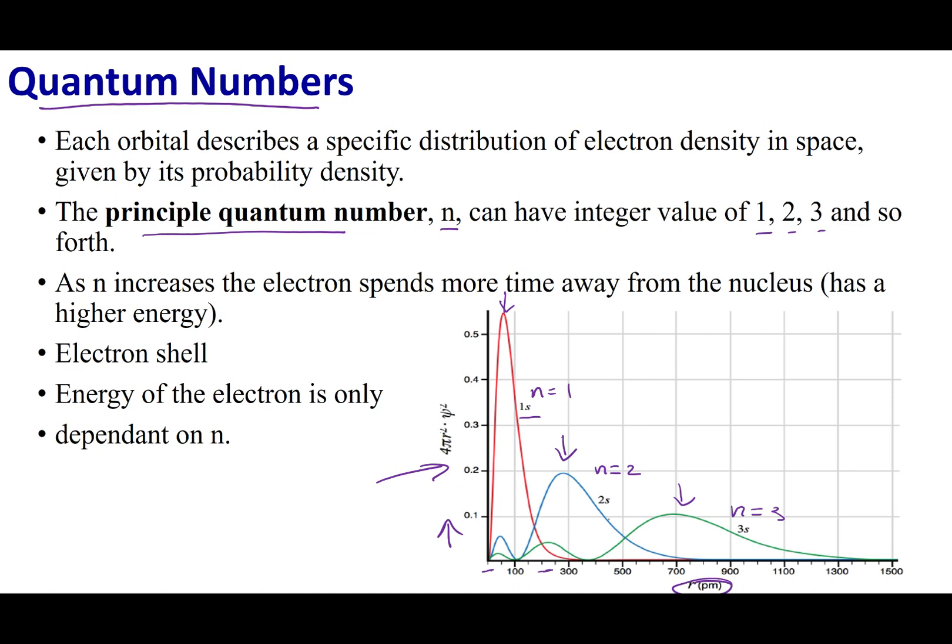For both n equals 2 and n equals 3, there is still some probability to find the electron a little bit closer to the nucleus.